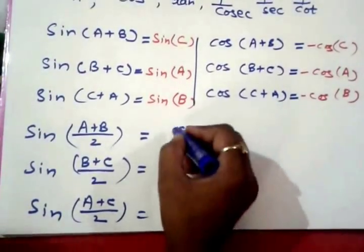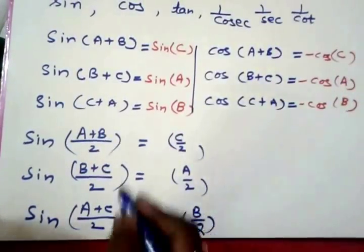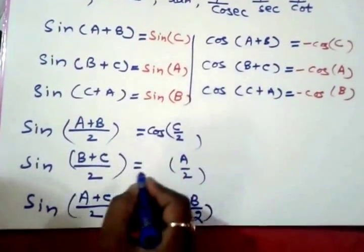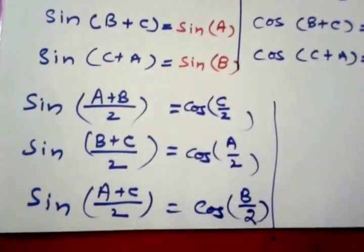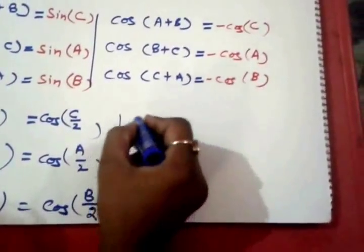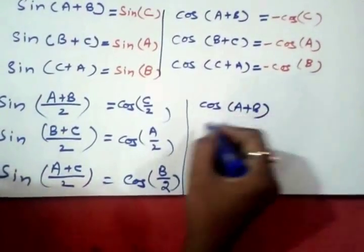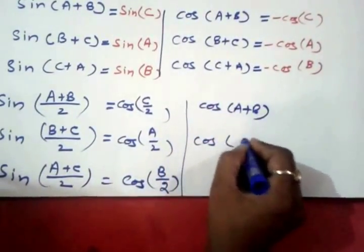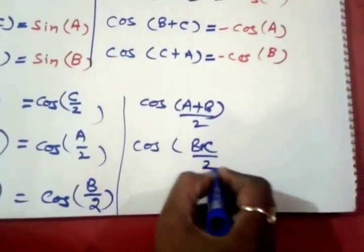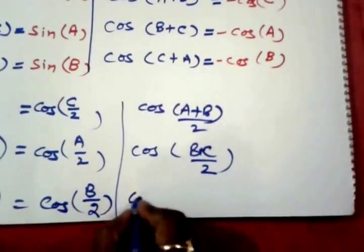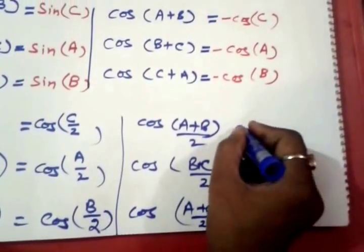cos((A+B)/2), cos((B+C)/2), cos((C+A)/2). The nature of cosine is...